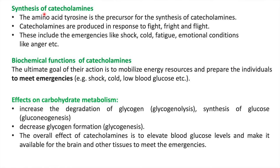Amino acid tyrosine is the precursor for synthesis of catecholamines. These catecholamines are released during fight, fright, and flight situations, as well as in emergency situations like shock, cold, fatigue, emotional conditions, and anger.